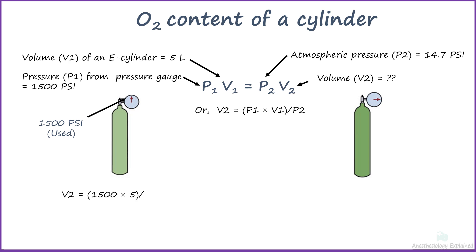Replacing with values, V2 equals 1500 into 5 divided by 14.7, which equals 510 liters. An E-cylinder with the pressure gauge reading of 1500 psi contains 510 liters of oxygen.